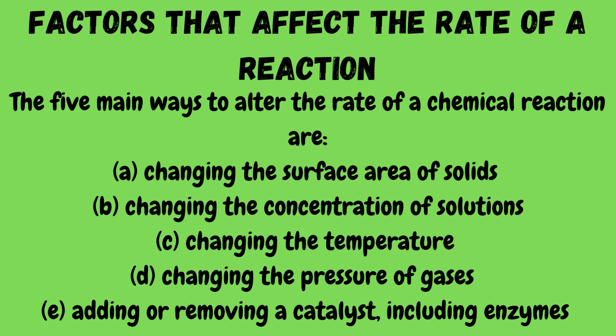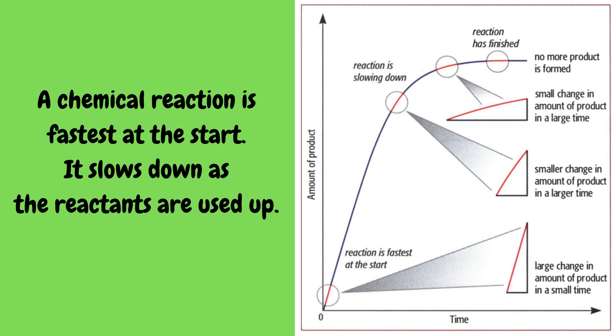The factors that affect the rate of reaction are: changing the surface area of solids, changing the concentration of solutions, changing the temperature, changing the pressure of gases, and adding or removing a catalyst including enzymes. This shows that a chemical reaction is fastest at the start and slows down as the reactants are used up.